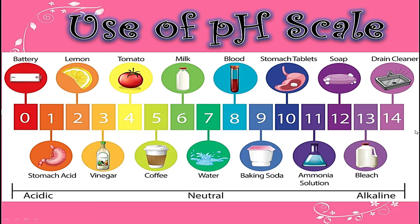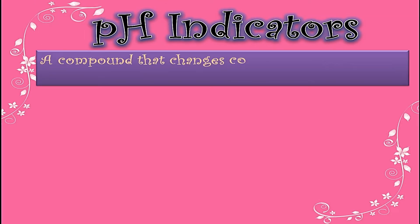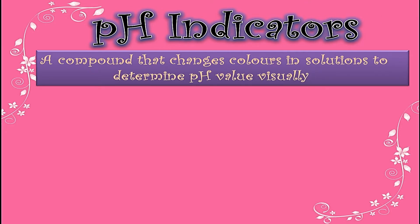So this is the use of pH scale — by knowing pH values we can identify whether substances are acidic, basic, or neutral. Now I will tell you about pH indicators. pH indicators are compounds that change their colors in solution to determine the pH value visually. These substances react with hydrogen ions or hydroxyl ions present in any substance and convert into colored compounds. From the color we can identify the pH of those solutions.